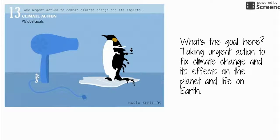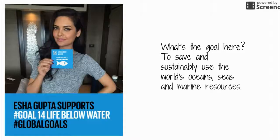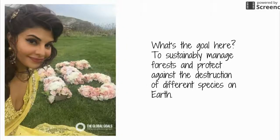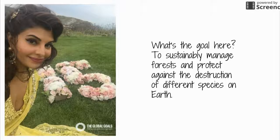Goal number thirteen — a lot of people worry about glaciers melting and where polar bears are going to live. One of the goals is to take urgent action, not just think about it, but actually do something to fix climate change and the way it's affecting life on planet Earth. Goal number fourteen is about life below water — using our ocean, sea, and lake resources in a way that we can keep having those things for everybody. Goal number fifteen is about life on land, managing our forests and protecting all the life in rainforests and species that could be in danger if we start cutting down all the trees.